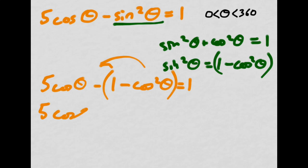You see, I get 5 times the cosine of theta minus 1 minus minus is plus cosine squared theta equals 1.